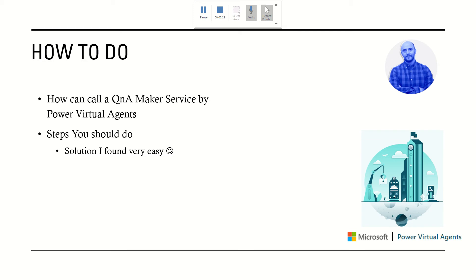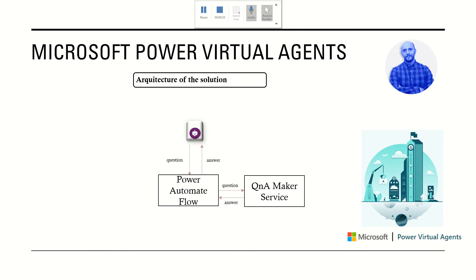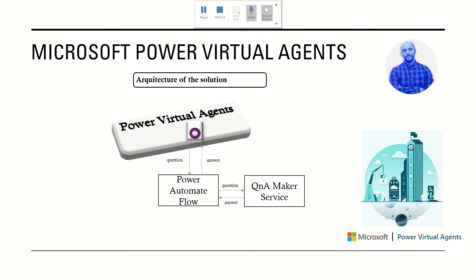Let me show you the architecture of the solution I have to present today. This is our bot — a COVID-19 bot — whose goal is to answer questions related to COVID-19. We will send a question to the Power Automate process, and Power Automate will ask QnA Maker, and after that we retrieve the answer and the bot answers to the customer.